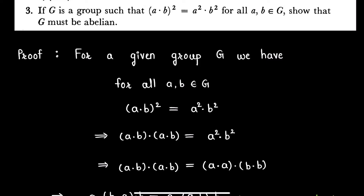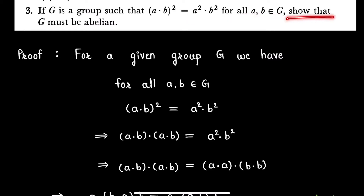Hello friends, in this video I am going to solve an exercise question from group topics in algebra. The question is: if G is a group such that (a·b)² = a²·b² for all a, b in group G, show that G must be abelian. So let's start our proof.